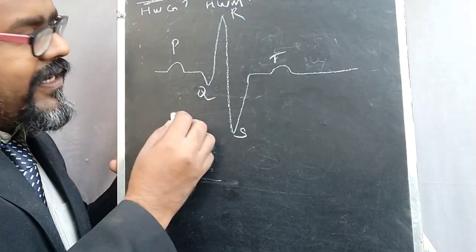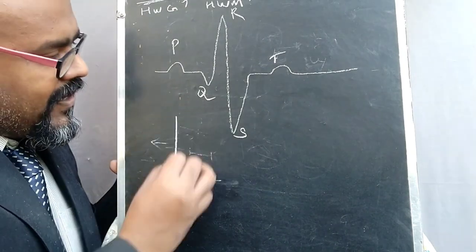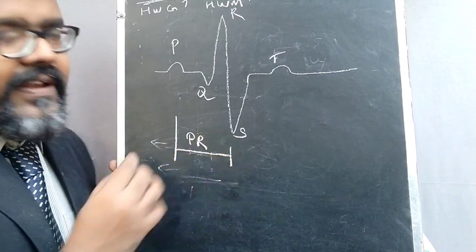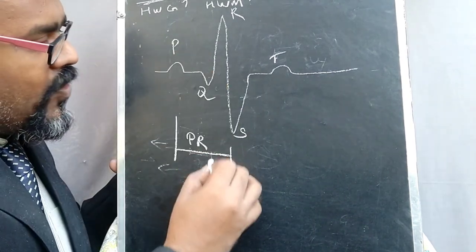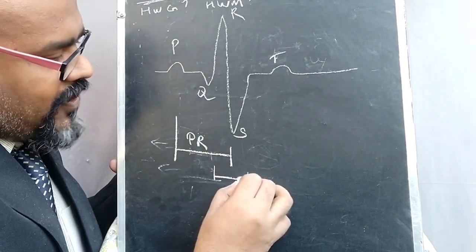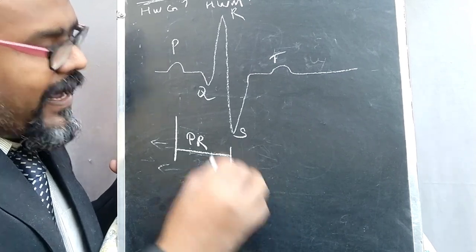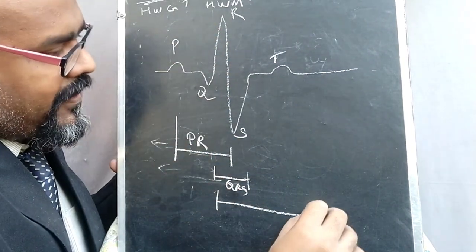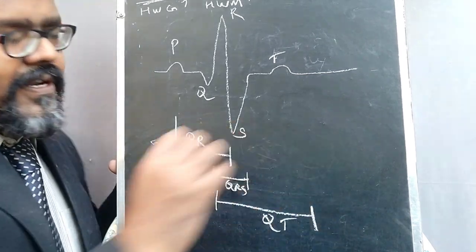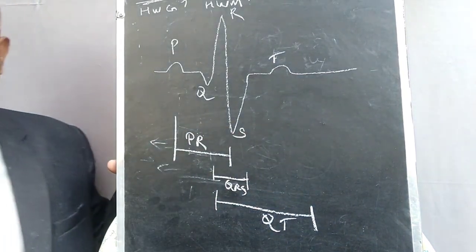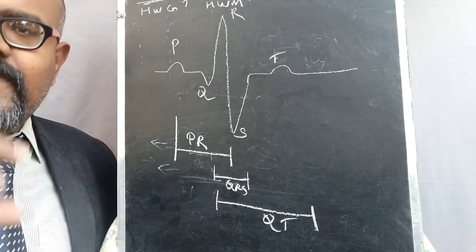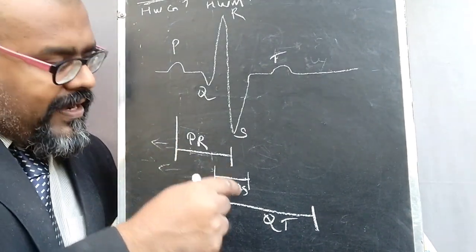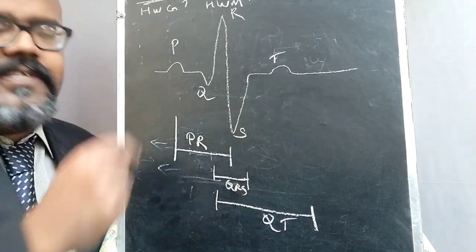Key intervals in the PQRST waveform include the PR interval, the QRS complex interval, and the QT interval — all of which are very important. When doctors want to analyze a patient's heart, they measure the PR interval, the QRS interval, and the QT interval.